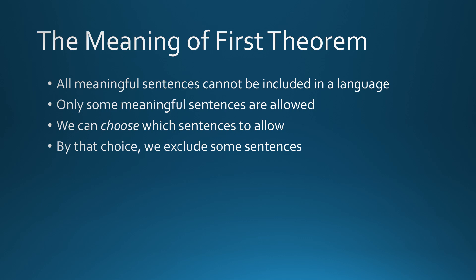The meaning of the first theorem is that all meaningful sentences cannot be included in a rational language — only some meaningful sentences are allowed if we want to avoid contradictions. We can choose which sentences to allow and which ones to deny, but by choosing some sentences while rejecting others, we exclude some sentences from a rational conversation. There is no other way to avoid contradictions; therefore all rational systems must be incomplete if they use words that can have multiple meanings.